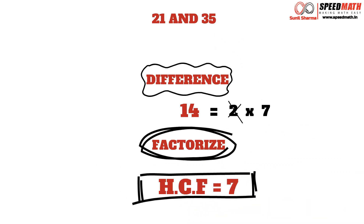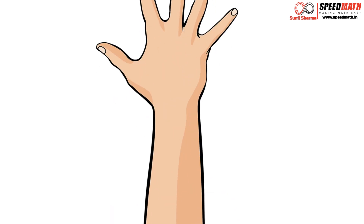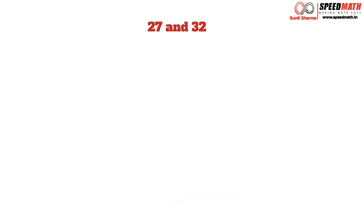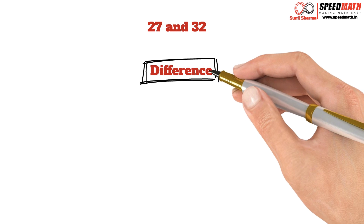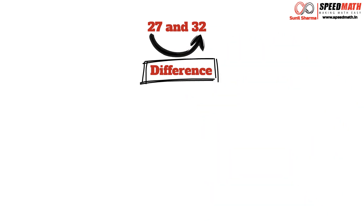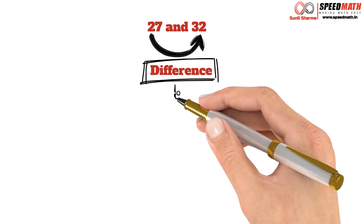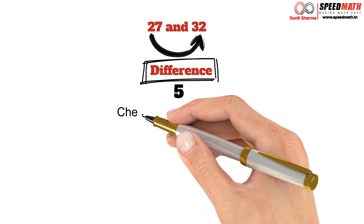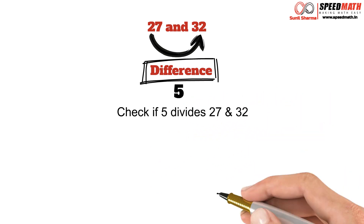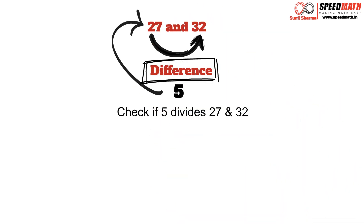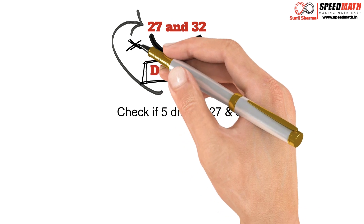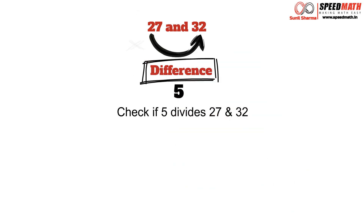Let's take one more example. Let's say we need to find HCF of 27 and 32. Step 1: let's find the difference between 32 and 27, and 32 minus 27 will give you 5. Now step 2: check if 5 divides 27 and 32. You can see 5 definitely does not divide 27, and since 5 does not divide one of the numbers, it cannot be HCF.